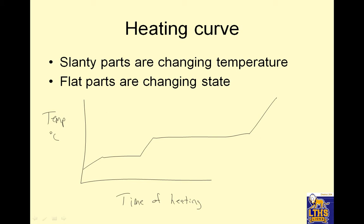If you start off with something in its coldest state of matter, that's going to be a solid. As you heat a solid it gets warmer — if I have a chunk of meat and I put it in the oven, the chunk of meat gets warmer. Then it flattens out and stops getting warmer; at that point it is a solid and a liquid — that would be melting. Then all the solid melts and you end up with just a pure liquid, then you get a liquid and a gas, and that is called boiling — not evaporation, boiling. Then here you have just a gas.